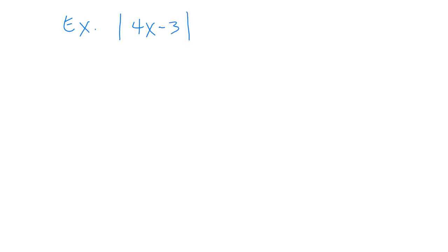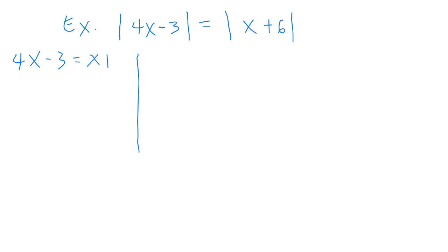Next example: the absolute value of 4x minus 3 equals the absolute value of x plus 6. There are two absolute value symbols — one on the left and one on the right. We apply the same approach: two possible solutions. The first is 4x minus 3 equals x plus 6, and the second is 4x minus 3 equals negative x plus 6.